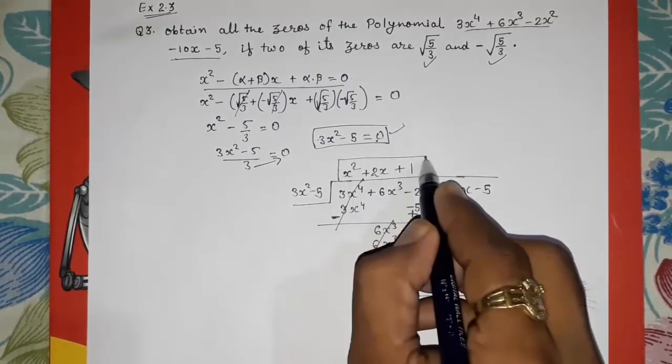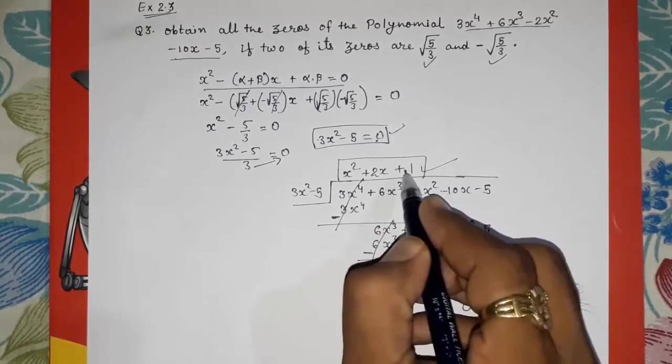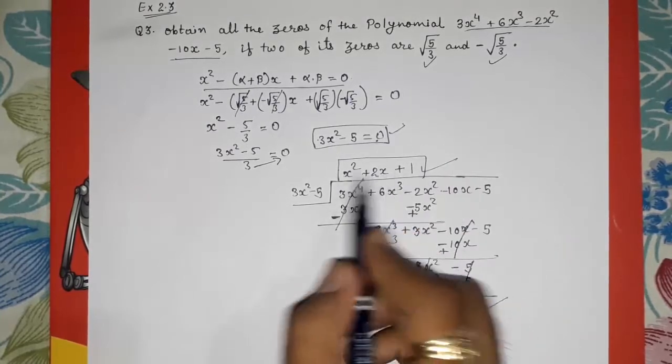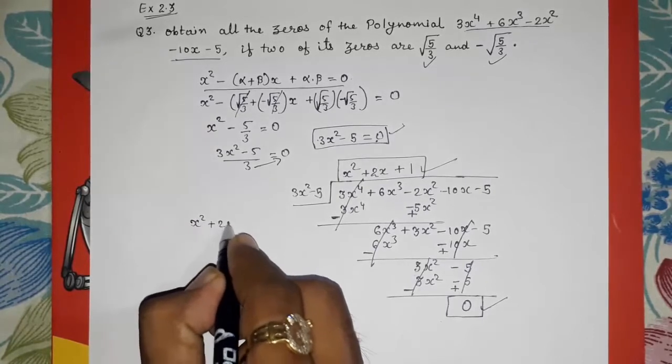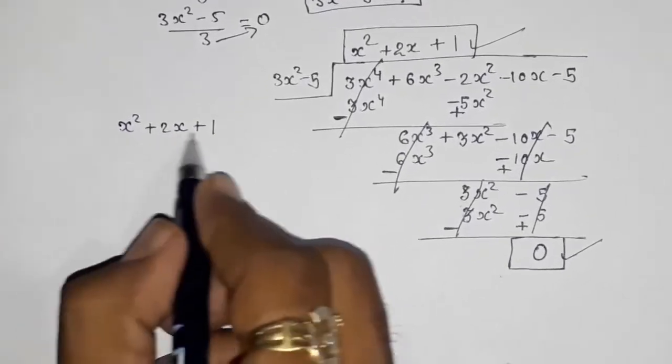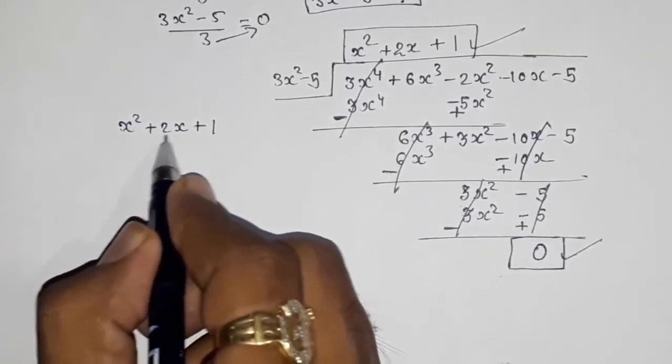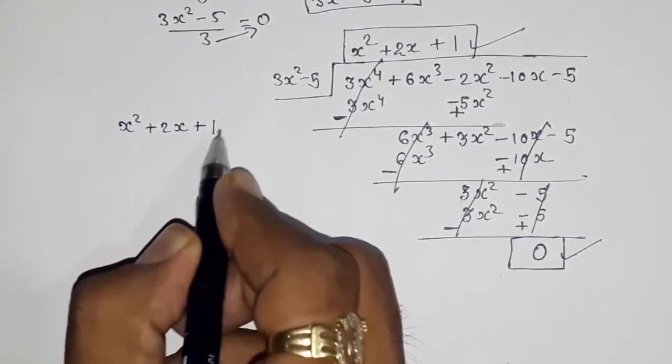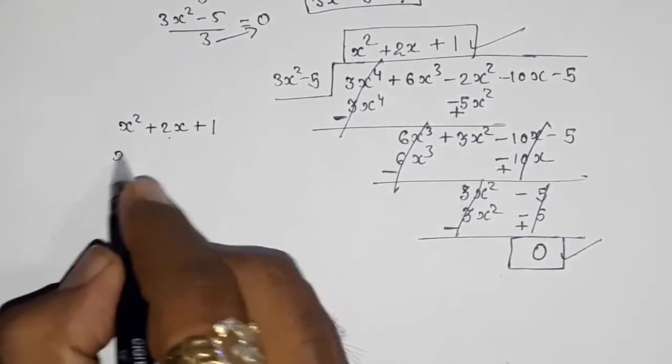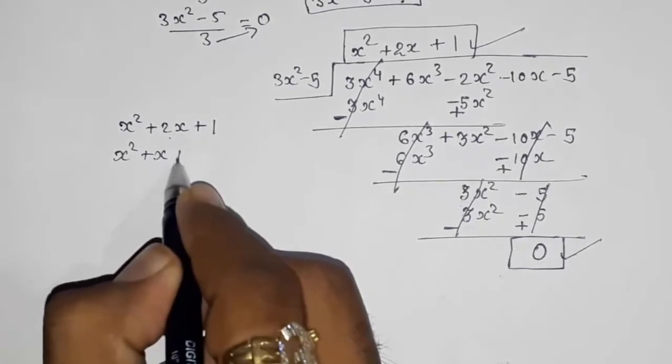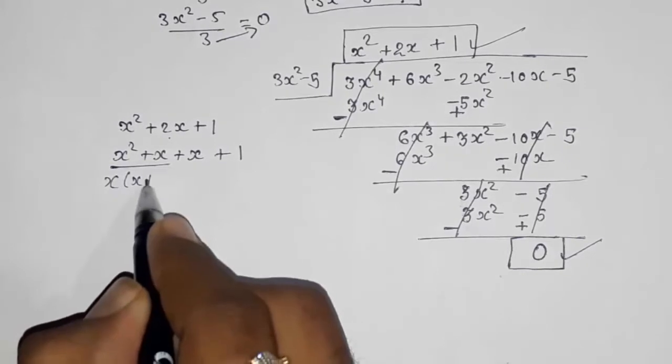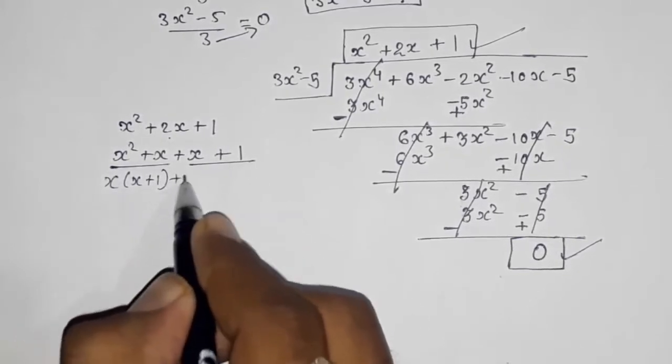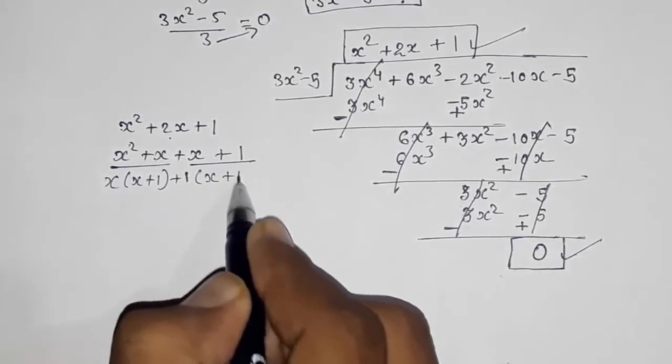Now we are going to do splitting the middle term of this quadratic x square plus 2x plus 1. So we know the factors will be 1x plus 1x will become 2x. So x square plus x plus x plus 1. Now take out x common: x(x plus 1). Again nothing common, so plus 1(x plus 1).